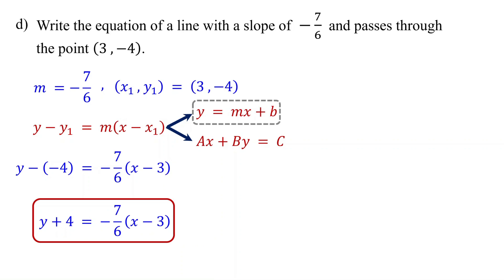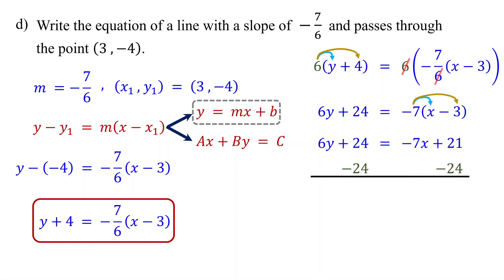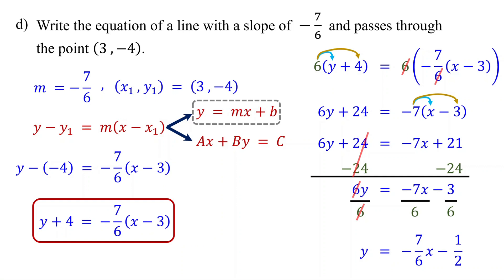Convert to slope-intercept form by eliminating the fraction — multiply both sides by 6. On the left, distribute the 6. On the right, the 6s cancel, leaving negative 7 times (x minus 3). Distribute the negative 7. Negative 7 times negative 3 is 21. Next, isolate the y term by subtracting 24 from both sides: on the left these cancel leaving 6y; on the right, 21 minus 24 is negative 3. Finally, isolate y by dividing both sides by 6. Simplify negative 3 over 6 by dividing each by 3 to get negative 1 half. This is the equation in slope-intercept form.